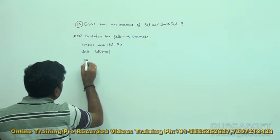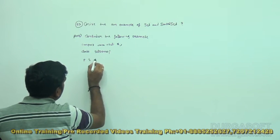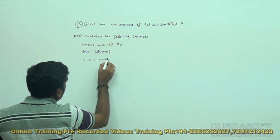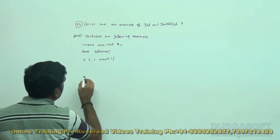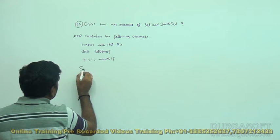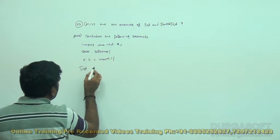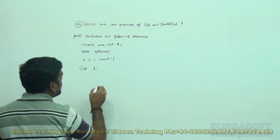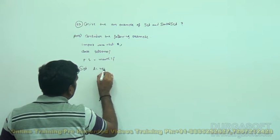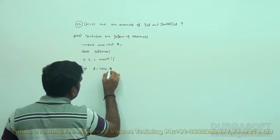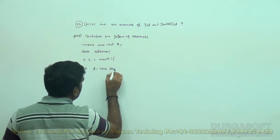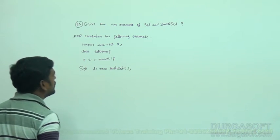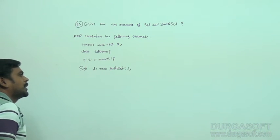Now the next, public static void main. Set S is equal to new HashSet.